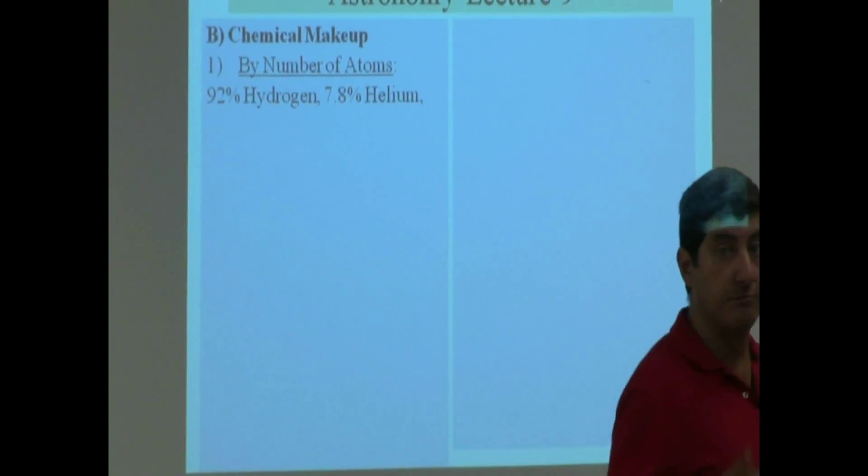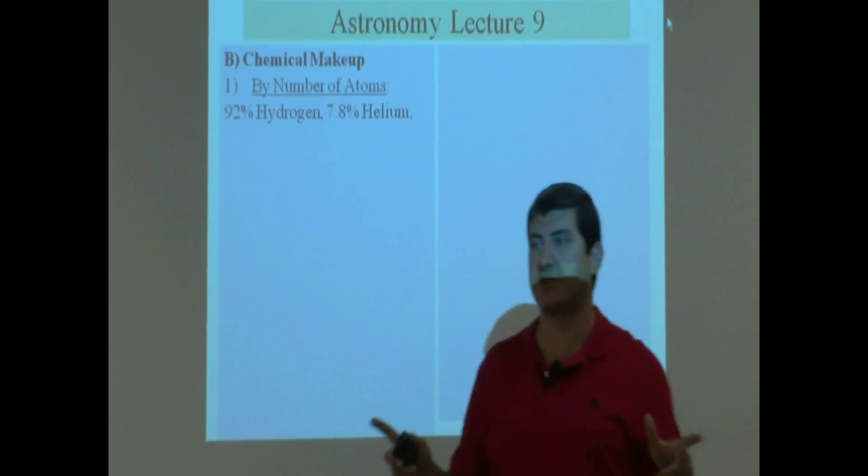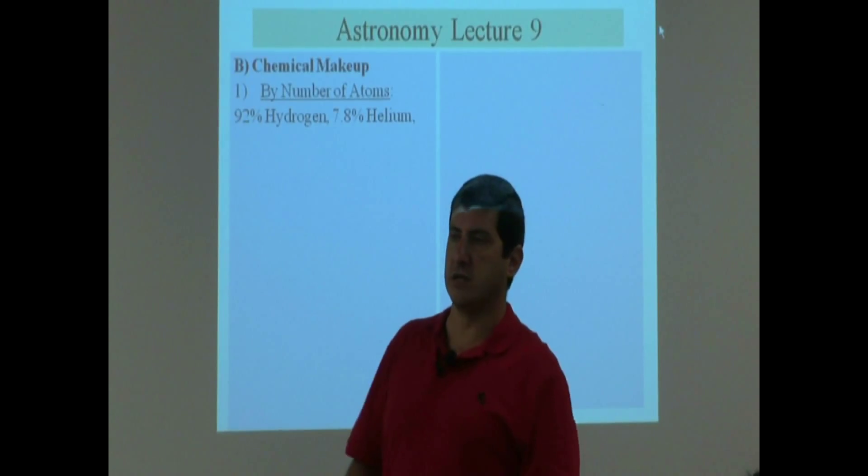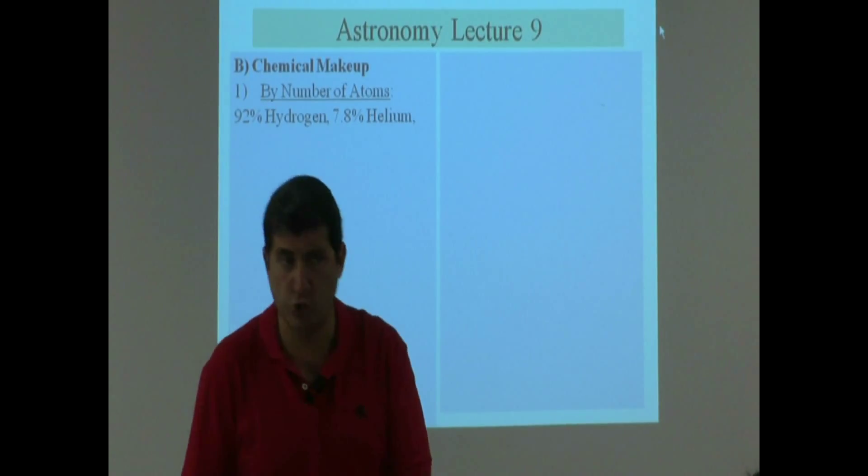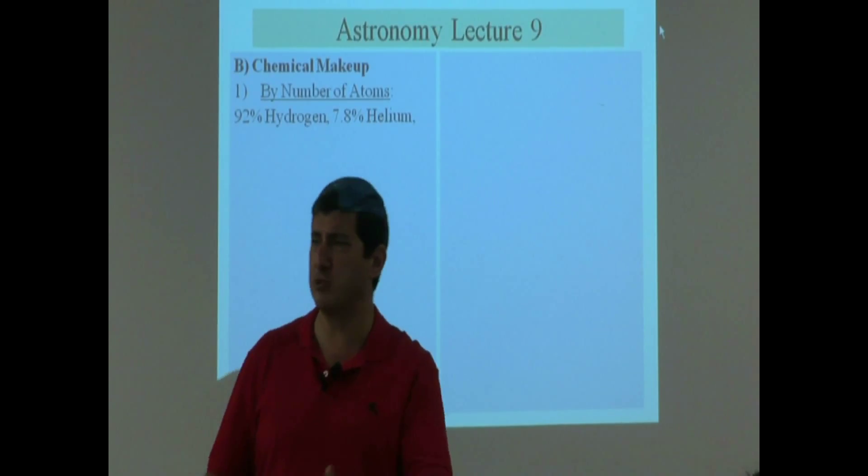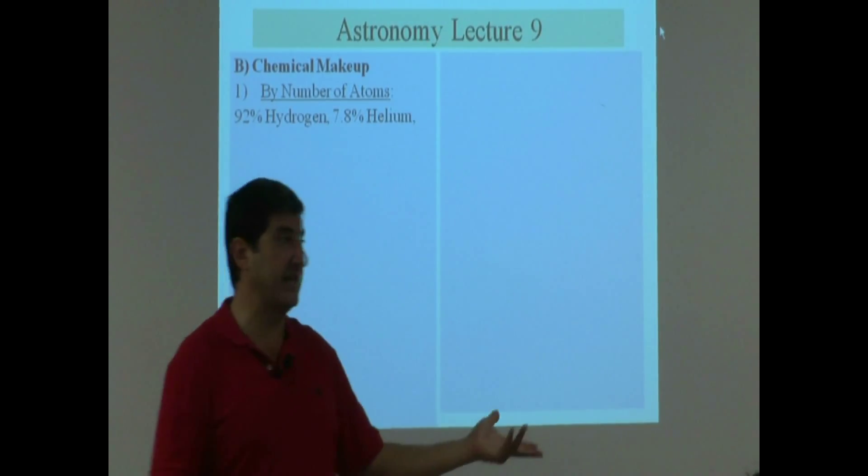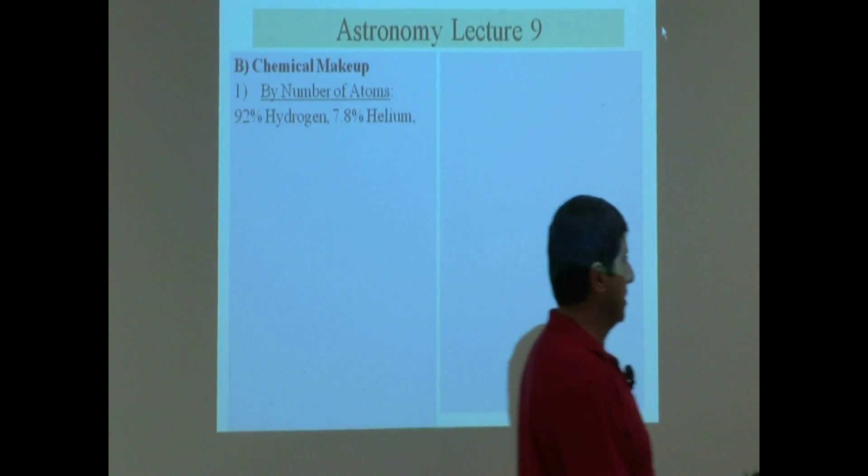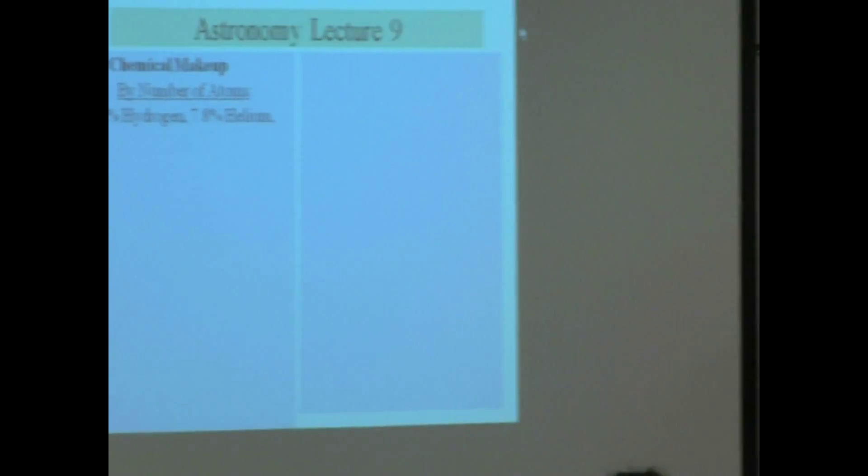By far, by the way, the most abundant element in the universe is hydrogen. Hydrogen is the most abundant element in Jupiter. It's the most abundant element in Saturn, Uranus, Neptune, all the stars, the gases in the universe. So most of the universe is hydrogen.